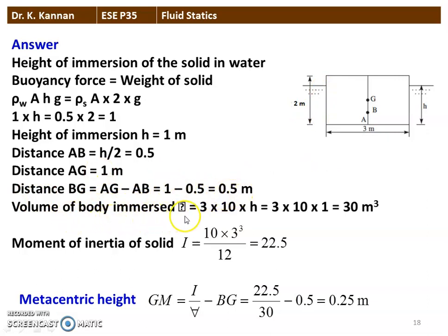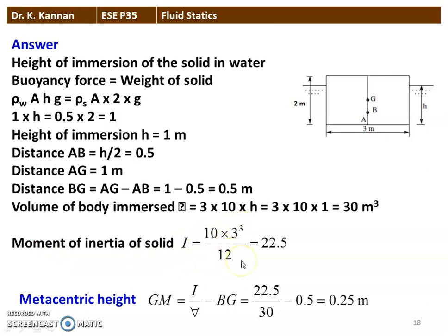Volume of the body immersed: V = 3 × 10 × h = 3 × 10 × 1 = 30 m³. Moment of inertia of the solid: I = 10 × 3³ / 12 = 22.5 m⁴. Metacentric height GM = I/V − BG = 22.5/30 − 0.5 = 0.75 − 0.5 = 0.25 meter.